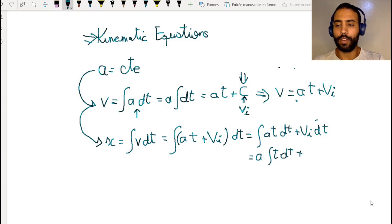Plus v_i, which is also constant, so it comes out of the integral as well. We end up with v_i dt. So this equals a times t squared over 2, plus v_i t, plus another constant.